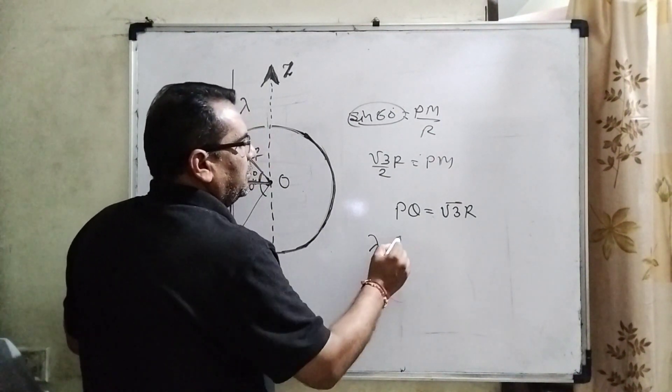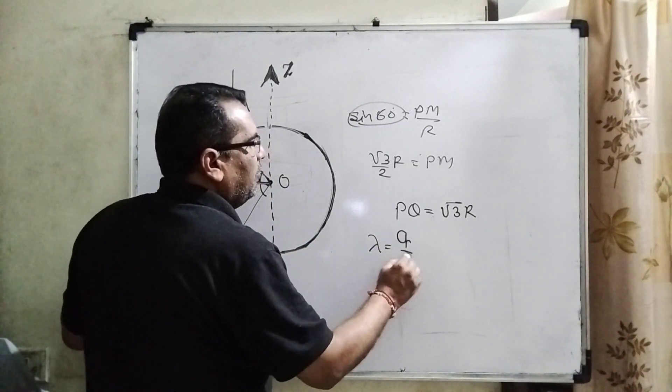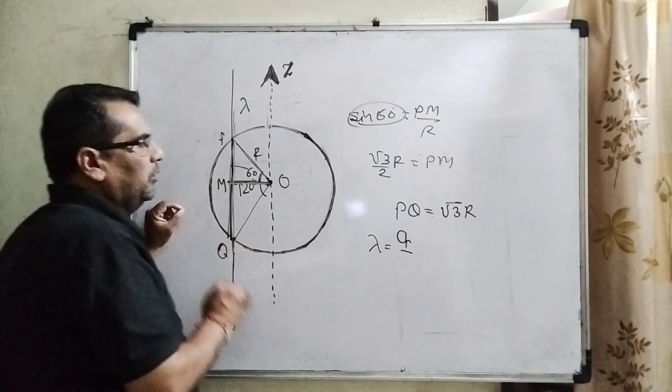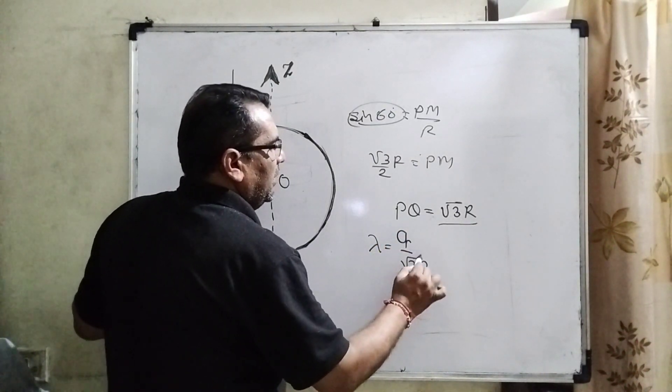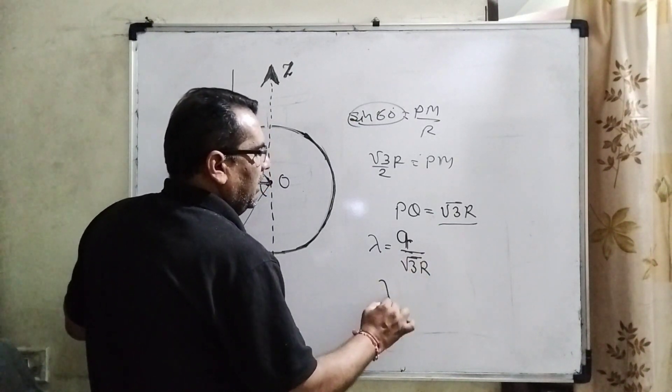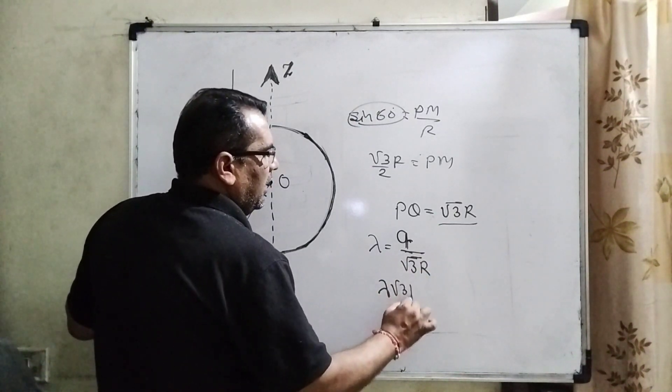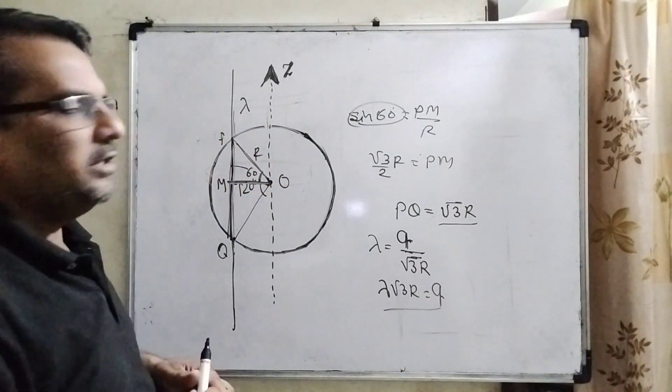So here we get the length and charge density. Lambda equals total charge, let's suppose Q, divided by the length PQ. Here root 3 R is total length. Then lambda times root 3 R equals Q. So we have found the total charge.